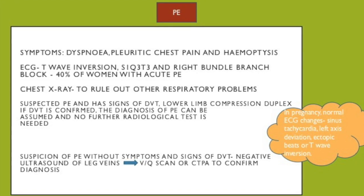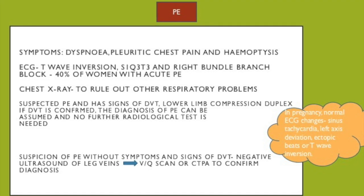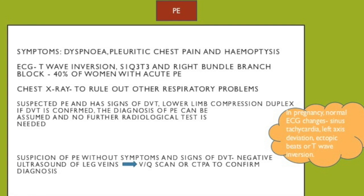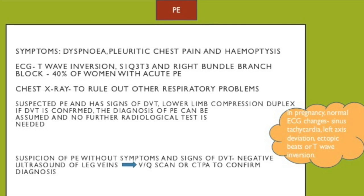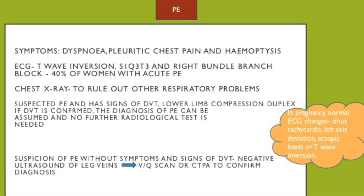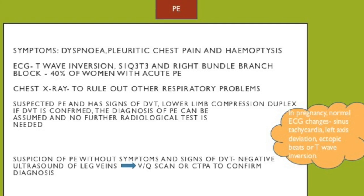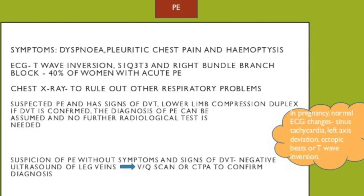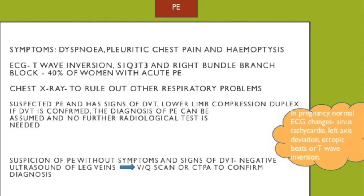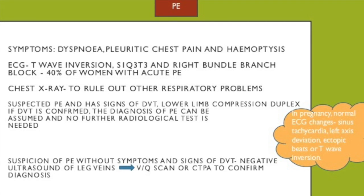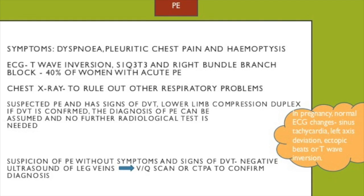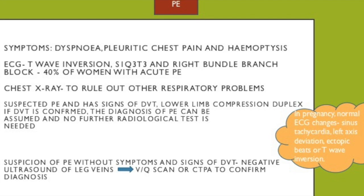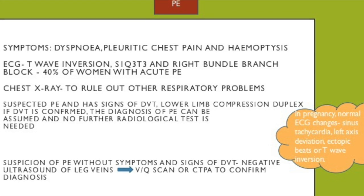A chest x-ray can rule out other respiratory problems. If there is suspected PE and signs of DVT, a lower limb compression ultrasound can be done. If DVT is confirmed, a diagnosis of PE can be assumed and no further radiological tests are needed. If there is suspicion of PE without symptoms and signs of DVT and a negative ultrasound of the lower limb, then a VQ scan or CTPA is needed to confirm the diagnosis.